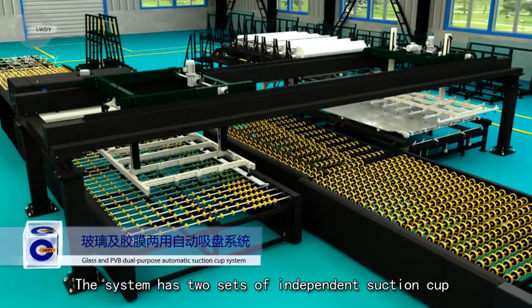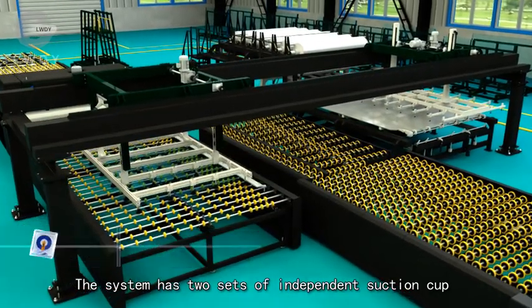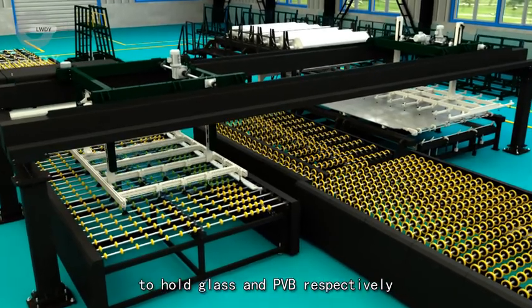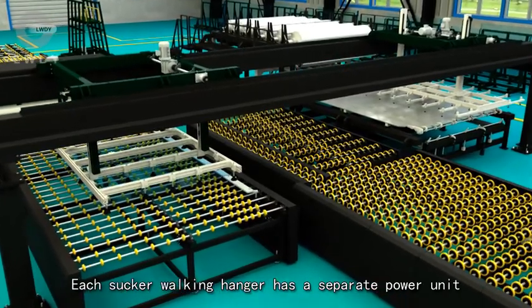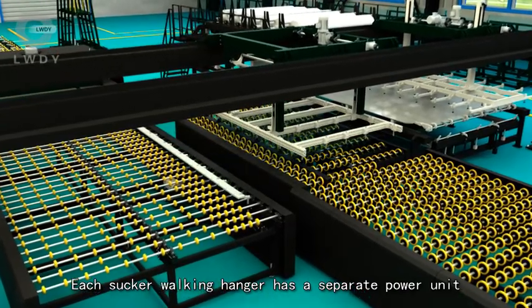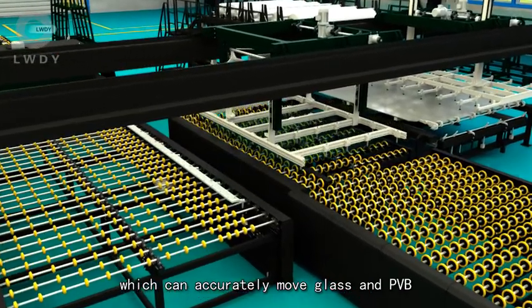The system has two sets of independent suction cups to hold glass and PVB respectively. Each sucker walking axis has a separate power unit, which can accurately move glass and PVB.